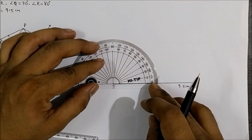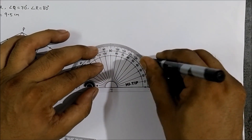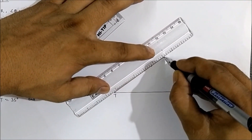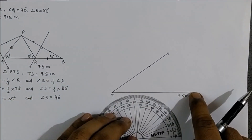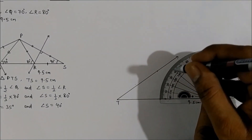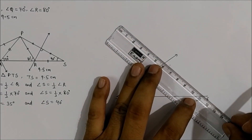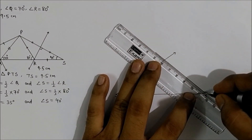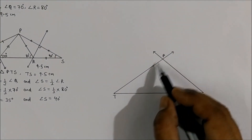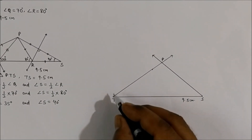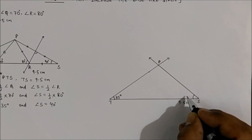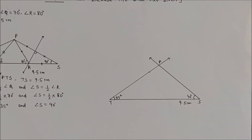At point T, make an angle of 35 degrees and draw the ray. At point S, draw an angle of 40 degrees. The intersection gives point P. So we now have triangle PTS where the base is 9.5 centimeters, angle T is 35 degrees, and angle S is 40 degrees.